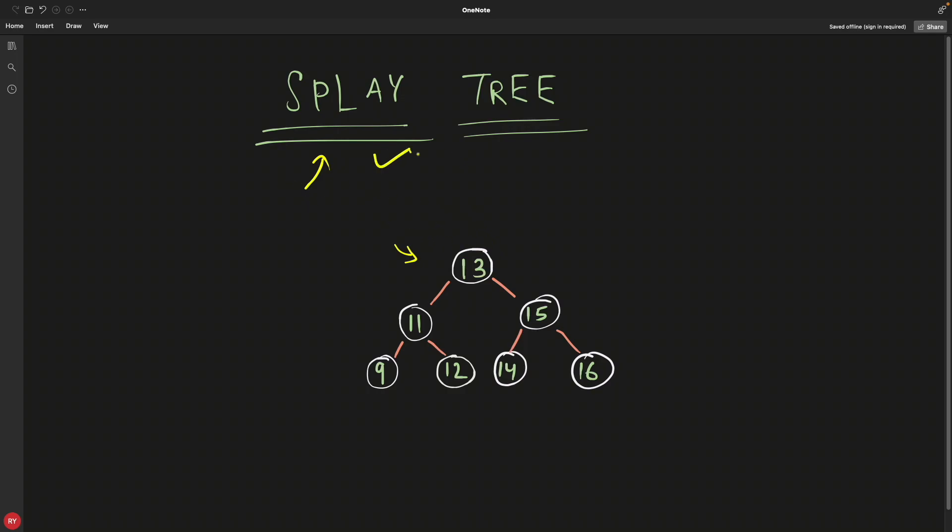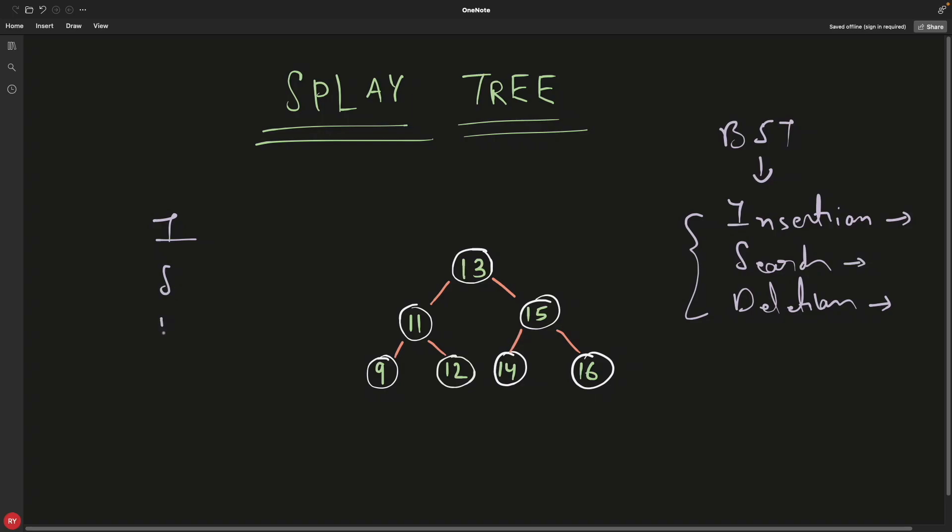Splay tree is actually equal to AVL tree and red-black tree, meaning this is also a self-balancing binary search tree. In binary search tree, there are different operations: insertion, search, and deletion. But splay tree does one thing extra. When it inserts data, just after that it does splaying. When it searches for some data, it does splaying just after searching that data. After deleting some data, it will do the splaying. After each and every operation like insertion, searching, and deletion, it does splaying.